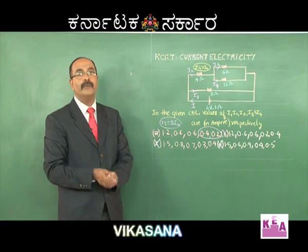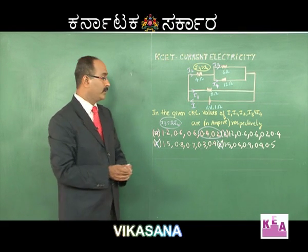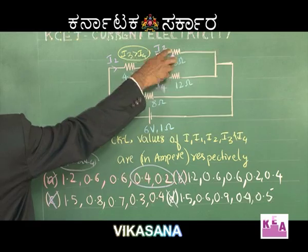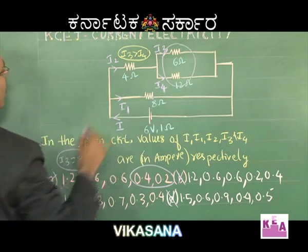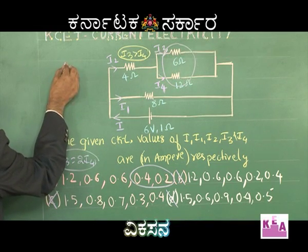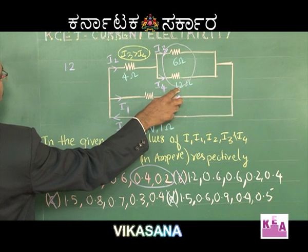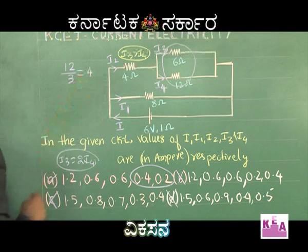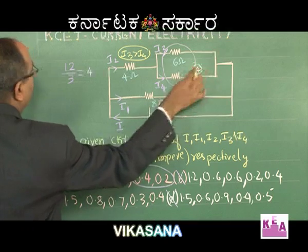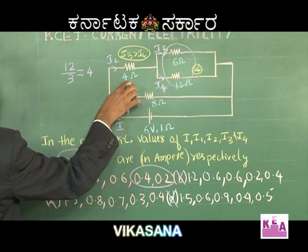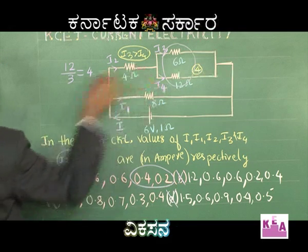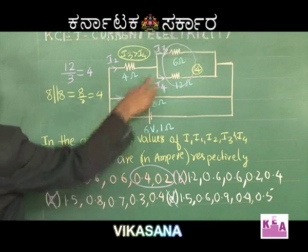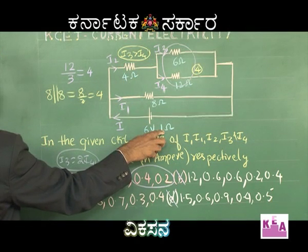Such a big problem solved just using common sense! But let me also explain the full solution. The equivalent of 6 ohm and 12 ohm in parallel: the highest is 12, which is 2 times 6 — add 1 to get 3, so equivalent is 12 divided by... that gives 4 ohms. This 4 ohms in series with the other 4 ohms gives 8. Then 8 parallel 8 gives 8 divided by 2, which is 4 ohms.